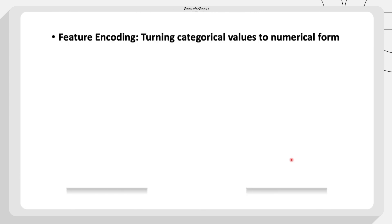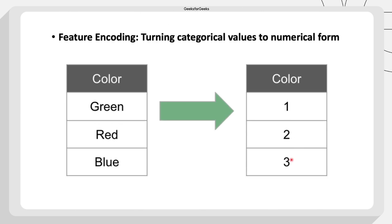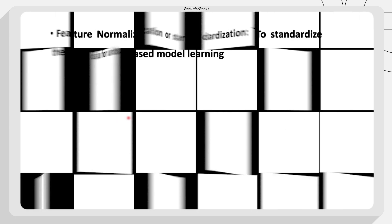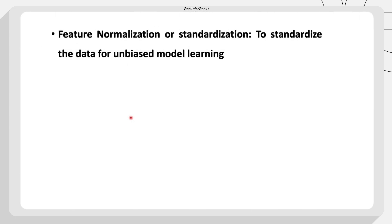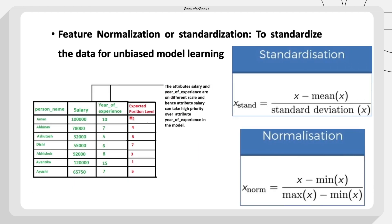Then comes feature encoding. For example, in a color label, you may have data like green, red, and blue — you can't feed these labels directly to a machine learning model because the model can't understand them. They are labels, so you need to convert them to a numerical form. We perform feature encoding to achieve this transformation.